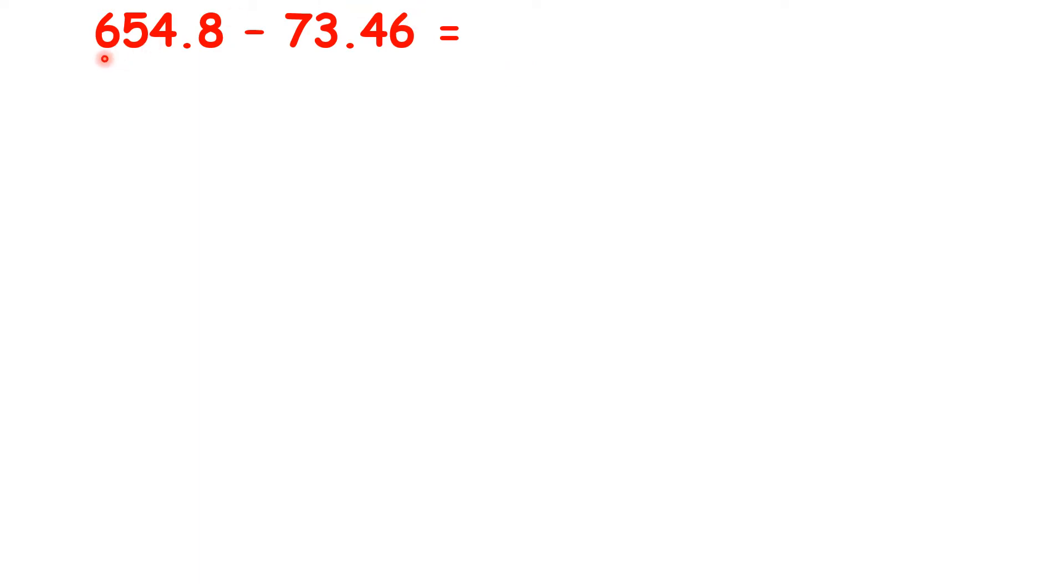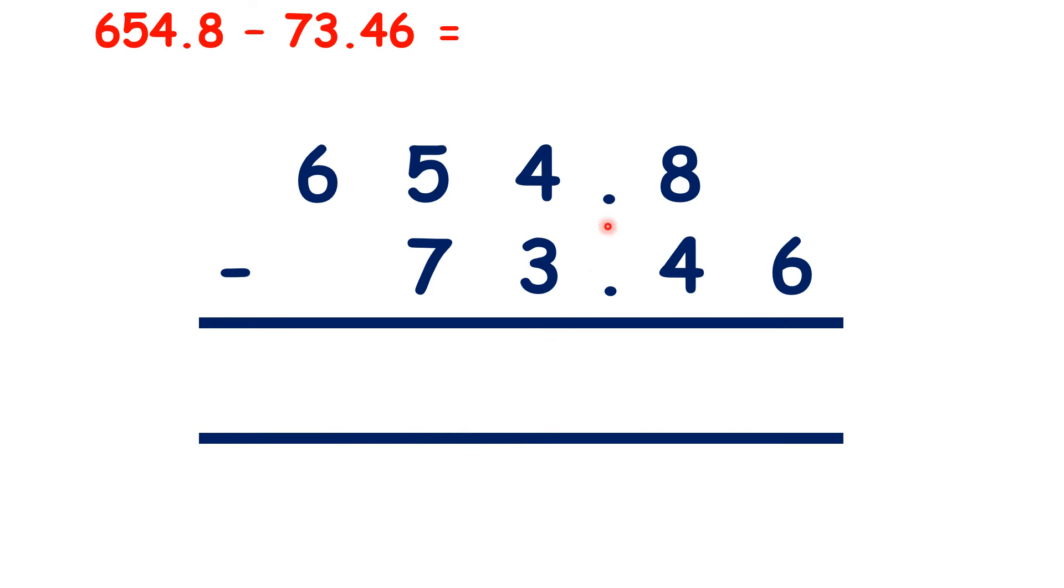Now we have 654.8 minus 73.46, so pause the video and see if you can answer this question. Our decimal points are lined up here, which means our place values are lined up. So we can write 0 in our empty place value column and a decimal point in our answer.